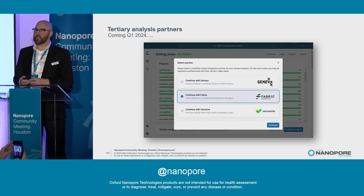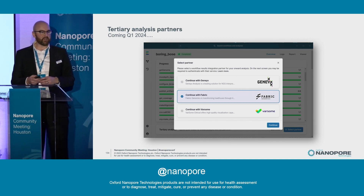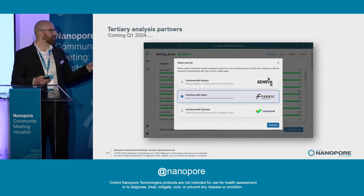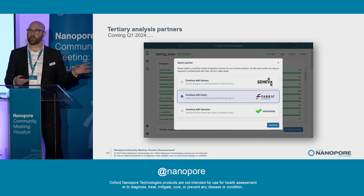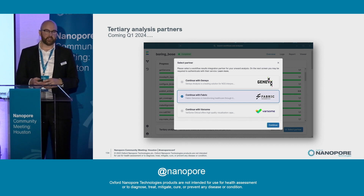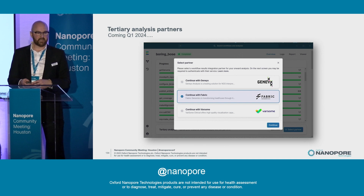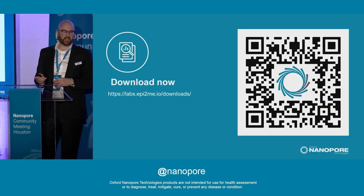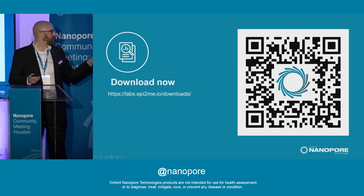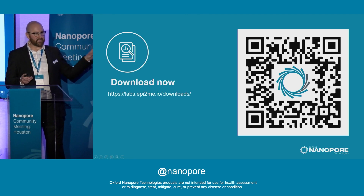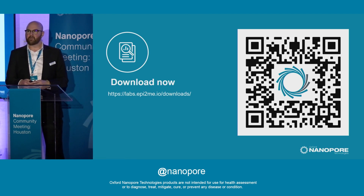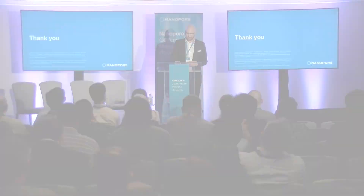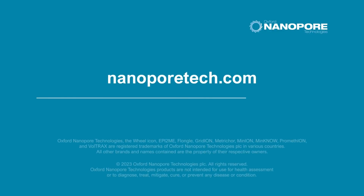After human variation has been executed, you're able to upload your VCF files to GenX, Fabric, or Varsome to do a full tertiary analysis. As always, Epitome is free to download — you can download it at this link and try it out on your own data. Thank you everybody.